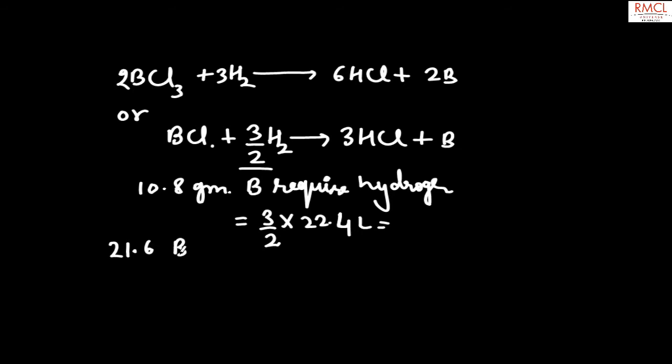This boron will require hydrogen equal to 3/2 × 22.4 divided by 10.8 × 21.6.